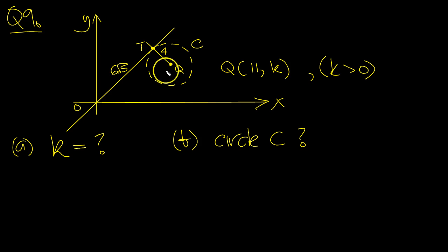OK, this distance is 4, 11 and k. So 11 would be the distance along here, wouldn't it? This is right-angled. The circle doesn't touch the bottom here.